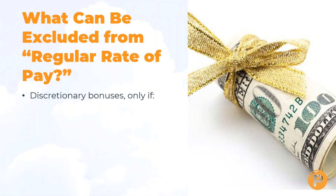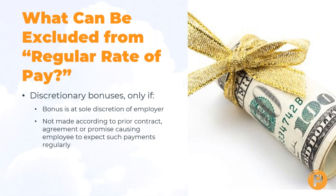Discretionary bonuses can be excluded from the regular rate of pay, but only if the bonus is at the sole discretion of the employer — for example, if you simply walk up to an employee one day and say you're giving them a $500 bonus. If that bonus is tied to any type of performance, or made according to a prior contract, agreement, or promise that causes the employee to regularly expect payment, then it cannot be excluded.